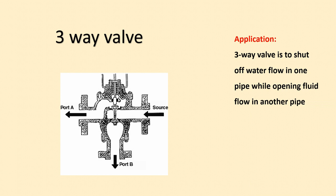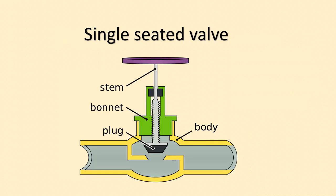Next is the three-way valve. From the figure you can see there is a single source inlet from the right side and two ports — port A and port B. The three-way valve shuts off flow in one pipe while opening flow in another. The process fluid entering the valve either goes into port A while port B is closed, or goes into port B while port A is isolated. That is the main function of a three-way valve.